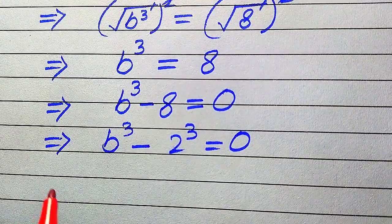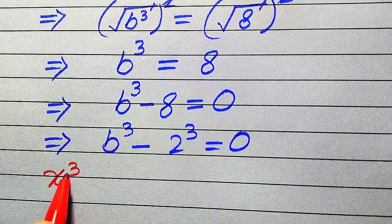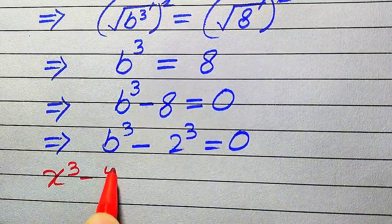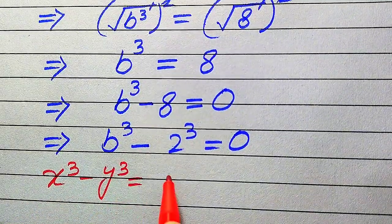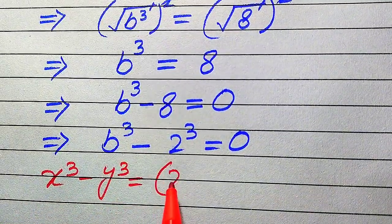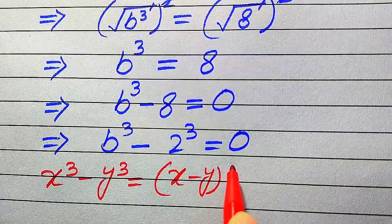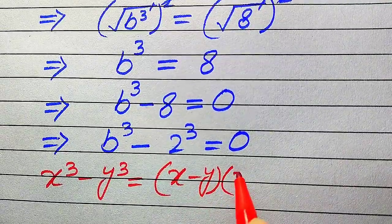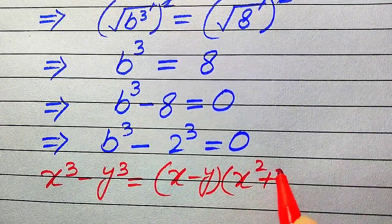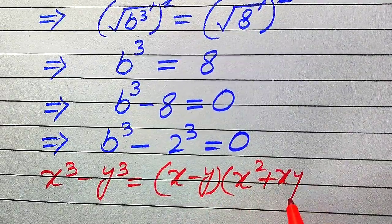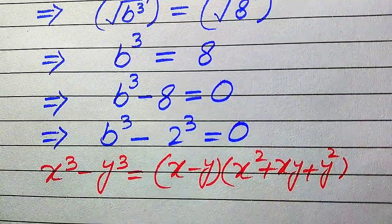Now we need to use the difference of cubes formula: x cubed minus y cubed equals to (x minus y) times (x squared plus xy plus y squared).